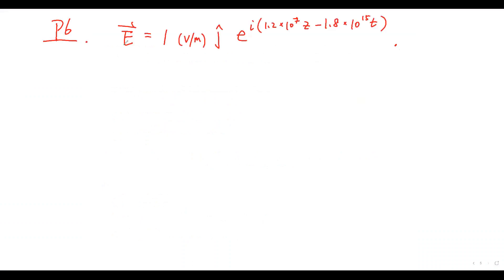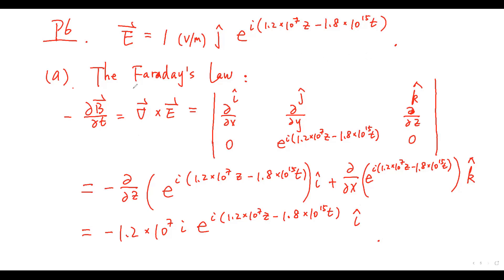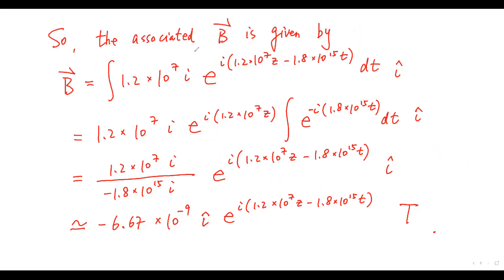Problem 6. We have the field B equals this one. The curl of E reads this one. This one equals this determinant. This determinant gives this vector. So, the associated B is given by this integral. This integral equals this vector.